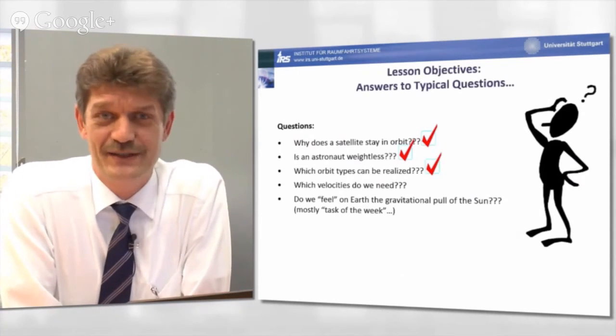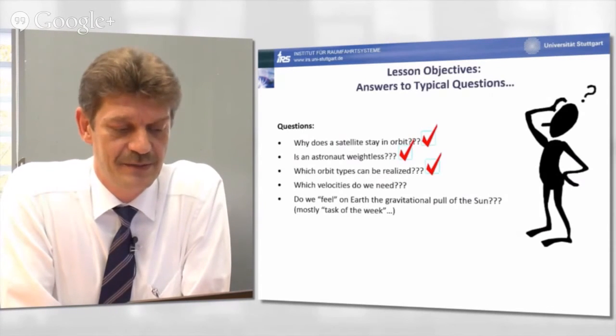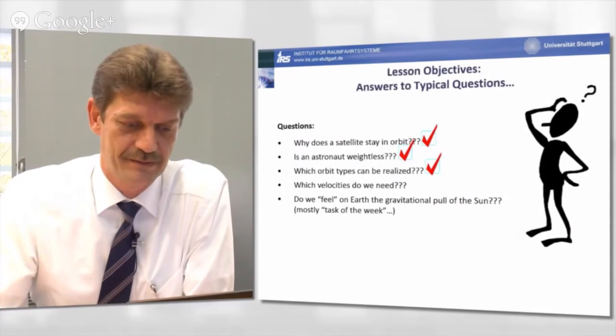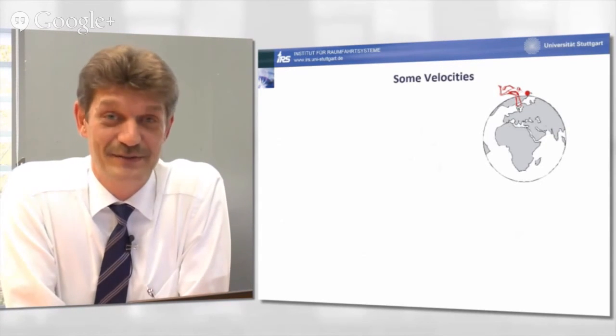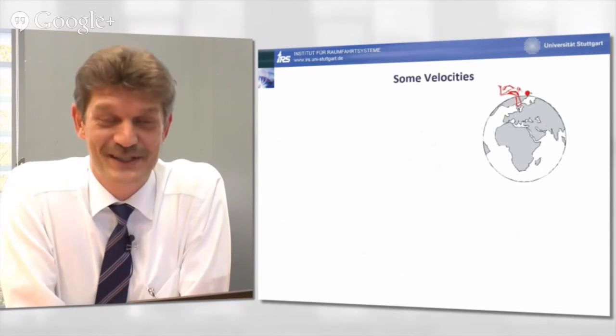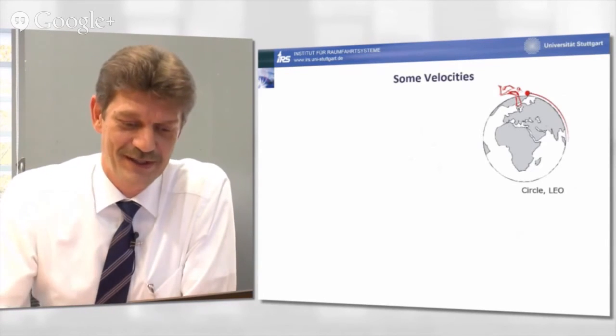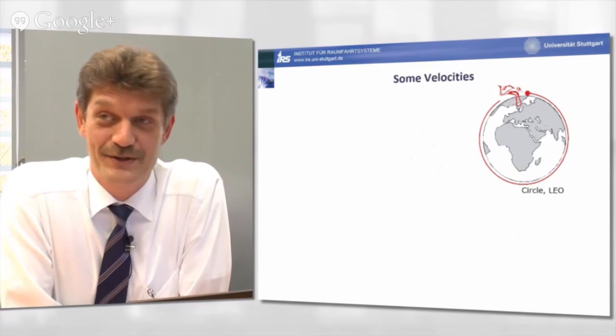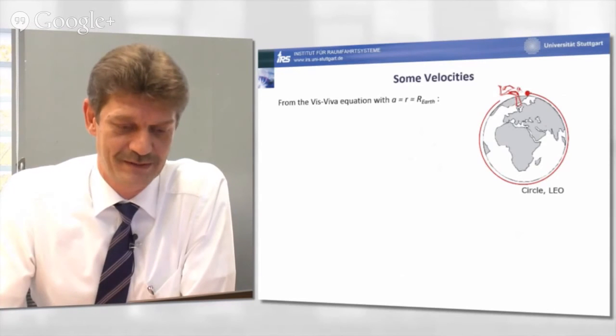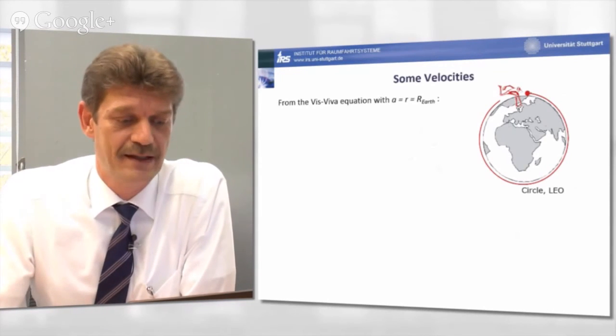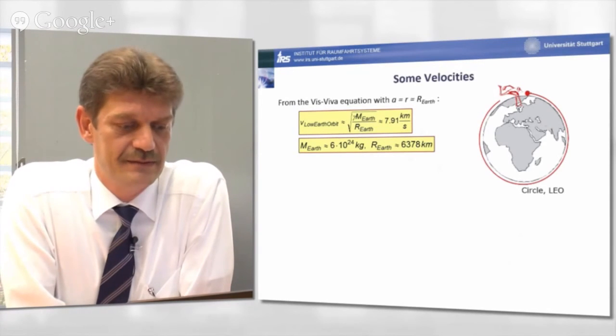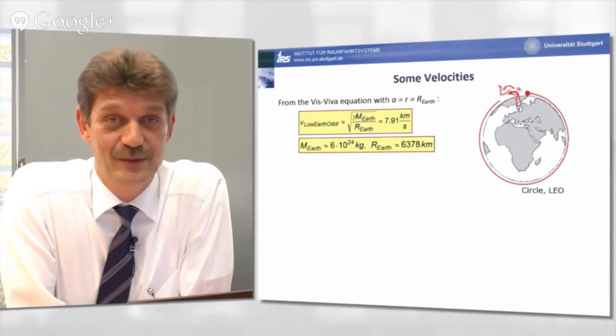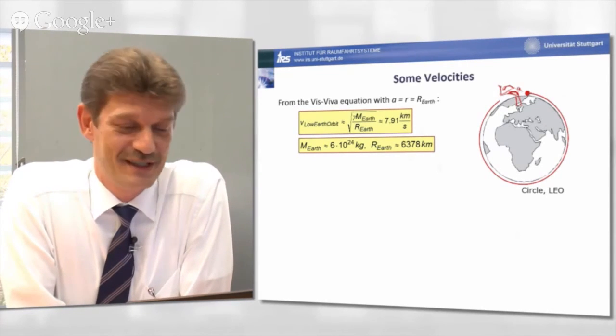The question is now, which velocities do we need, indeed, as a boundary, as a limit, to establish maybe a low Earth orbit. So, assume you are standing on a mountain, on a circular Earth, without any atmosphere and you have enough power to accelerate a ball, to throw a ball. Which velocity would you need in order to establish a circular orbit scratching the Earth's surface, so-called low Earth orbit? Well, nothing else than the Vis-Viva equation, with the semi-major axis of the radius of the circular orbit equaling to the Earth's radius. And if you calculate these velocities, the velocity you would need is 7.9 kilometers per second. This is, by the way, called the first cosmic velocity.